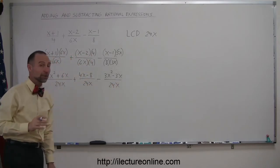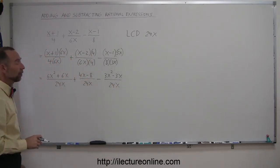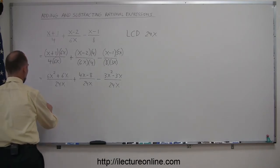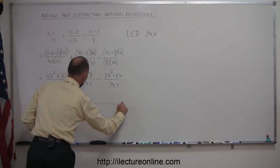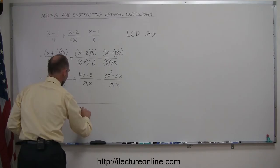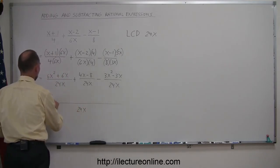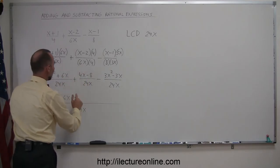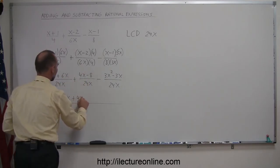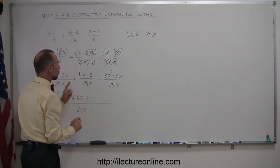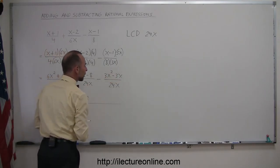So now you can see that all three fractions have the same denominator. So you can write all that over a single denominator. So we'll rewrite this as everything over 24x. So here we have 6x squared plus 6x. Then we add to that 4x minus 8, and then we subtract from that the 3x squared minus 3x.